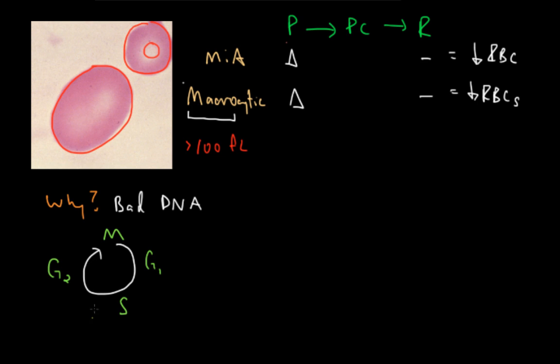And then before it splits in the M phase, it goes through G2, where the cell grows and grows. And along the way, there are a couple of checkpoints that the cell has to pass through in order to complete the cell cycle. There's one before S, and there's one in between G2 and M.